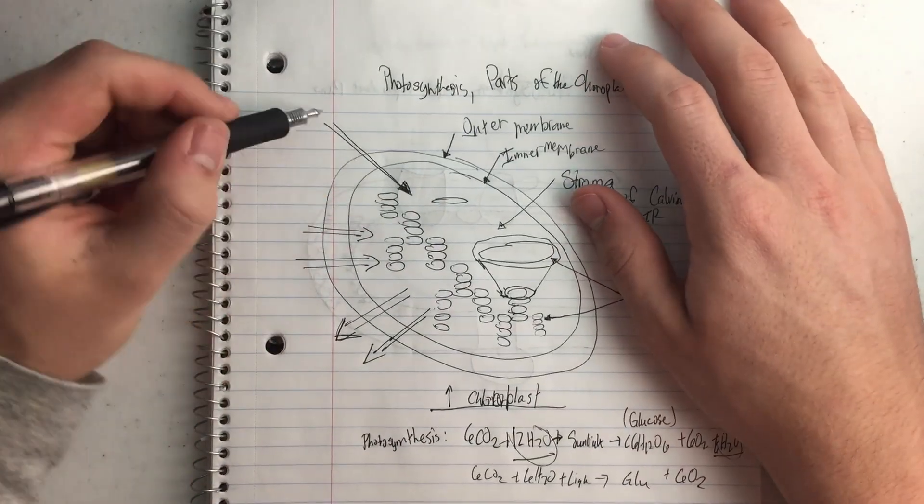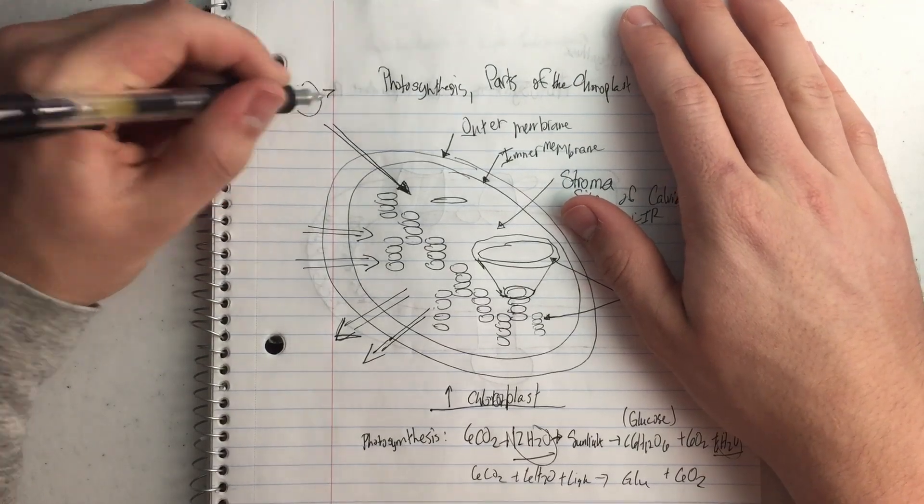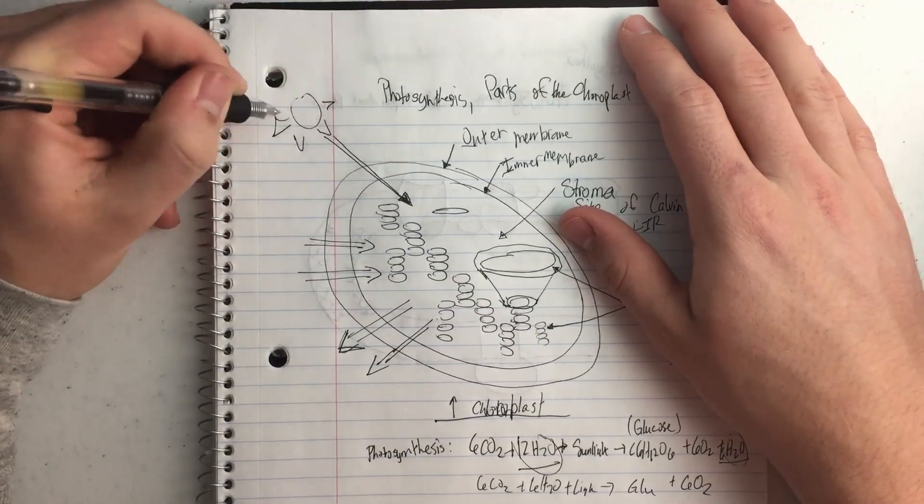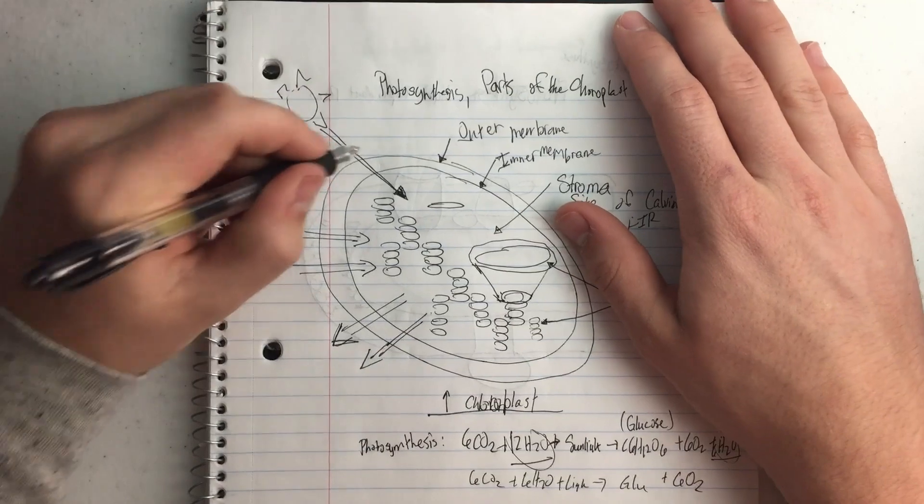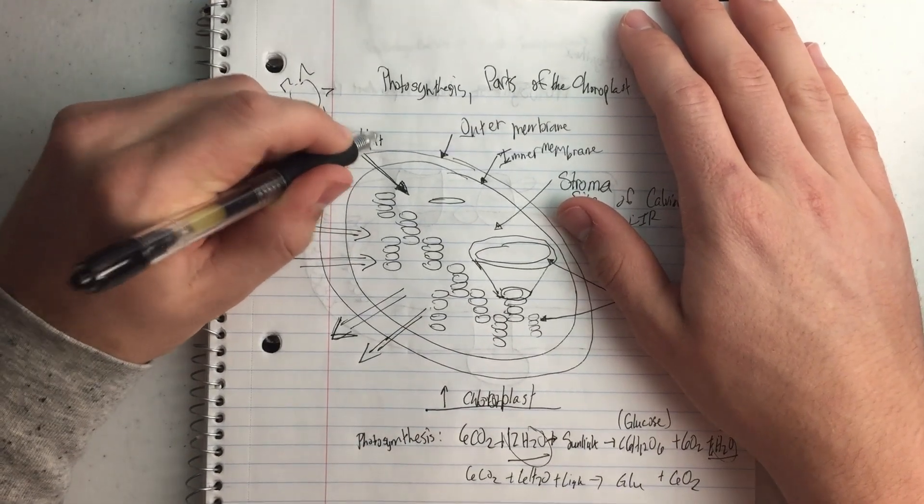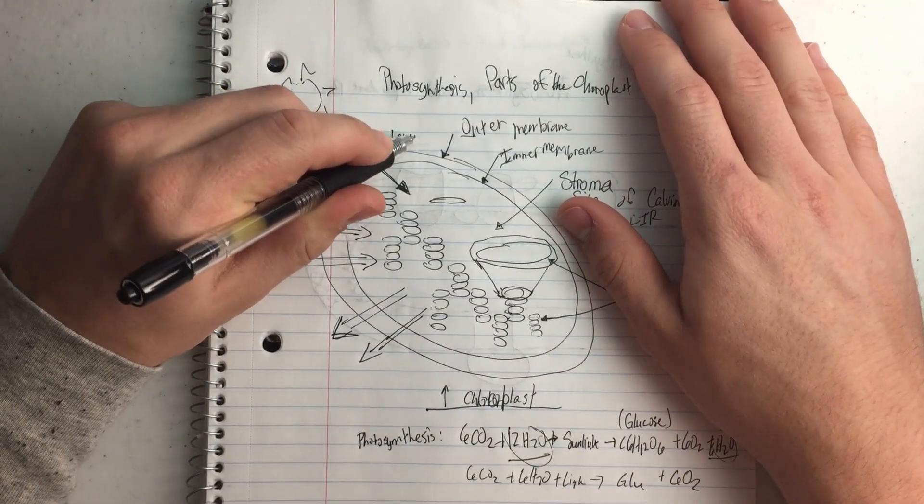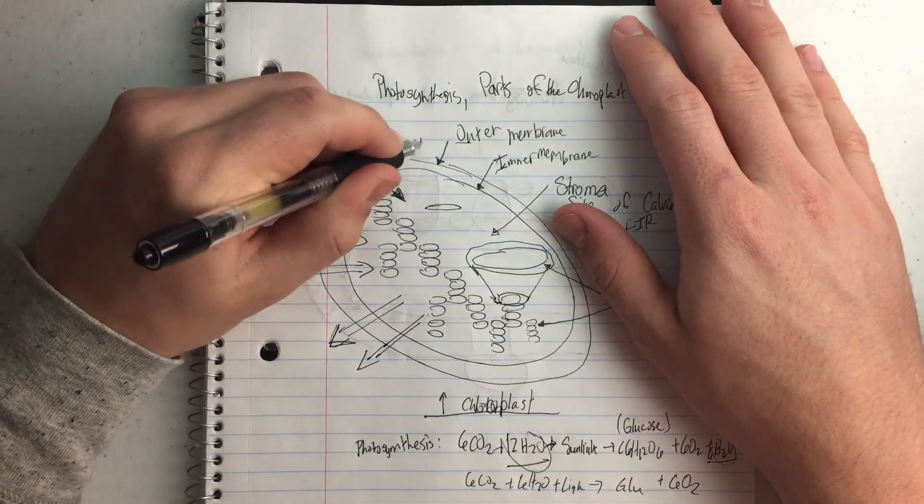And so looking at that, this is just the sun, because we need the light energy to go in. So the sun shines, this is going to be light energy coming into the chloroplast.